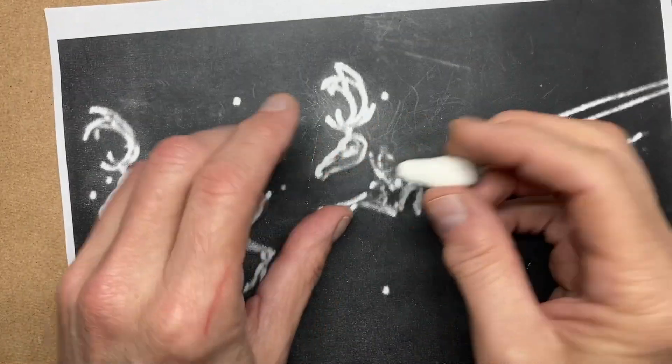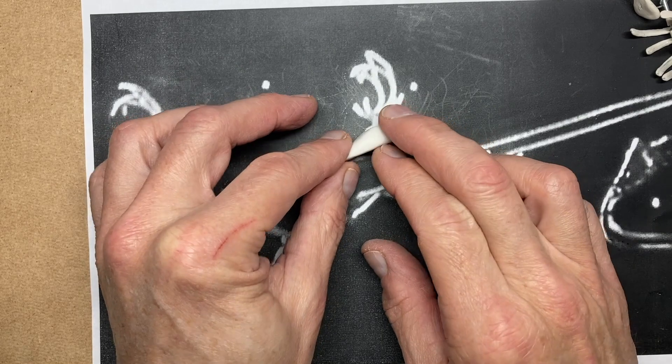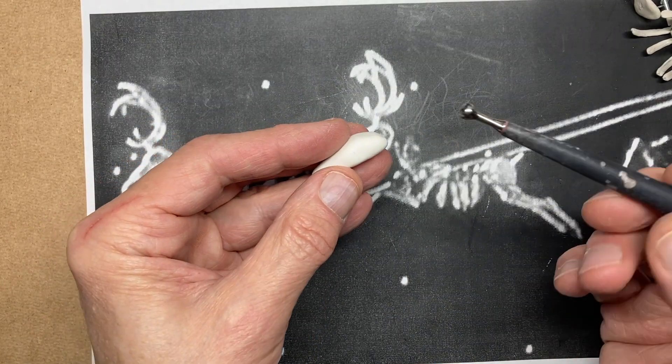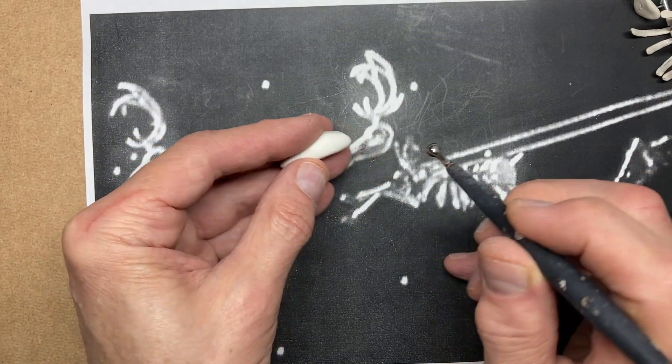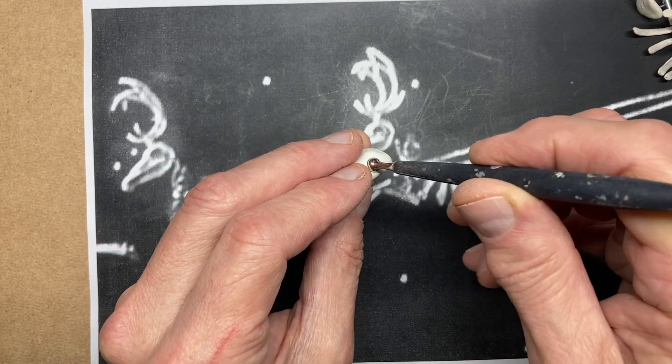I'm going to make the head for this reindeer. That is the kind of shape that I'm after. With one of my rounding off tools, I can pop. There we go. An eye.